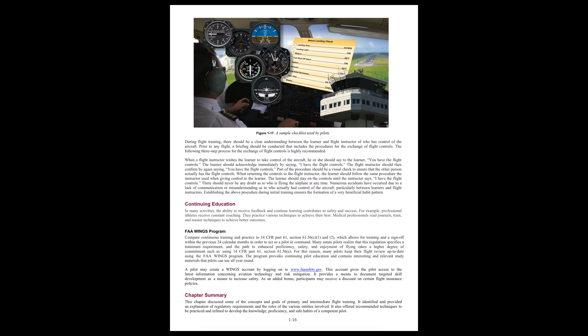Chapter Summary. This chapter discussed some of the concepts and goals of primary and intermediate flight training. It identified and provided an explanation of the regulatory requirements and the roles of the various entities involved. It also offered recommended techniques to be practised and refined to develop the knowledge, proficiency, and safe habits of a competent pilot.